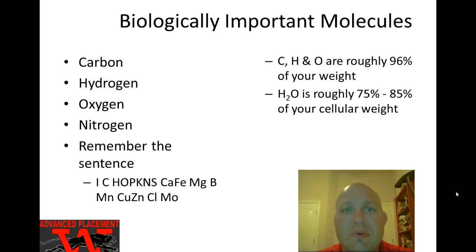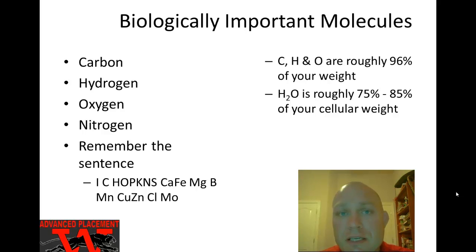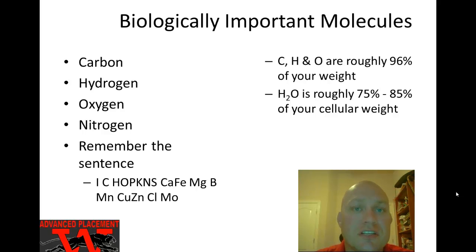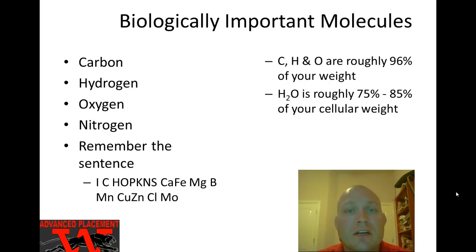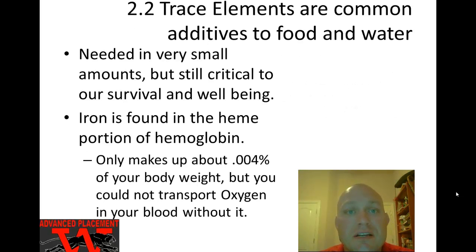Hydrogen and oxygen put together form water. Nitrogen is in every single protein in your body, in your DNA in the nucleus of your cells, and in RNA, which you use for protein synthesis. Together, carbon, hydrogen, oxygen, and nitrogen make up 96% of your body weight — if you weighed 100 pounds, 96 of those pounds would be made up of CHNO.